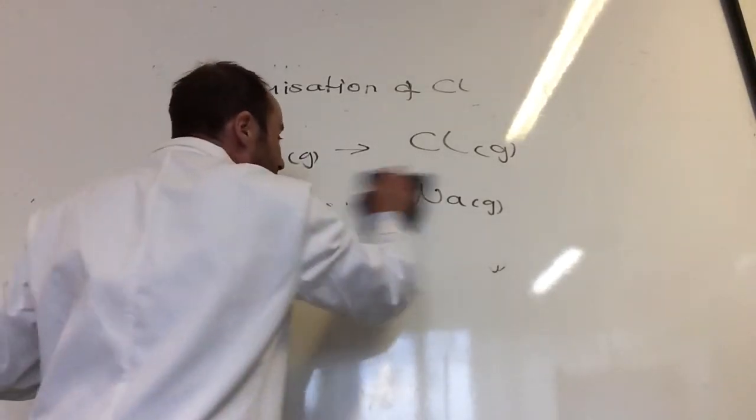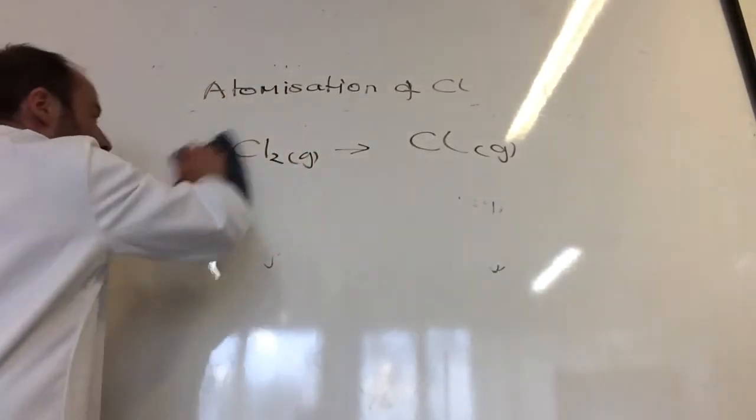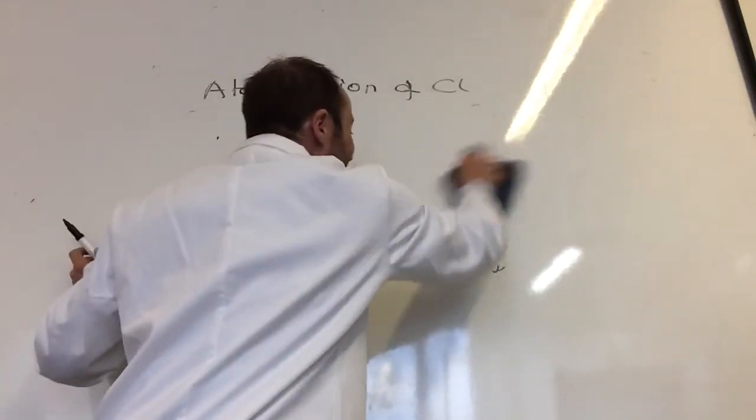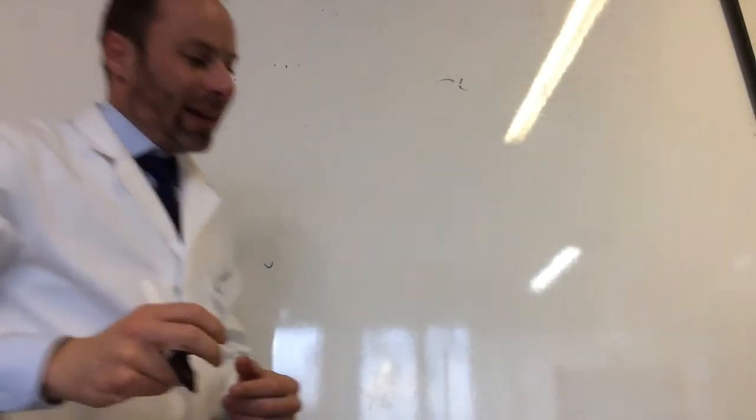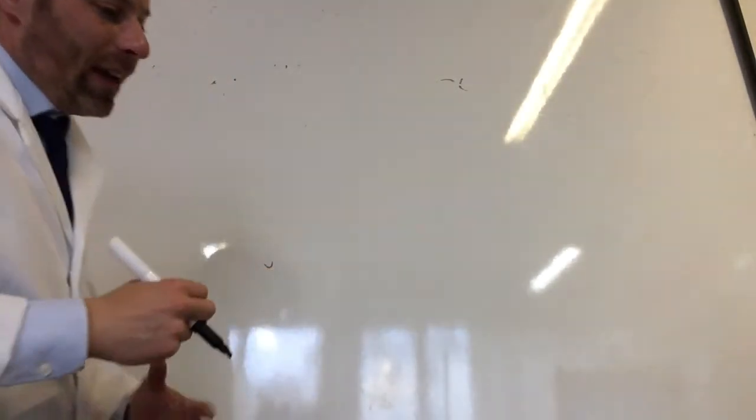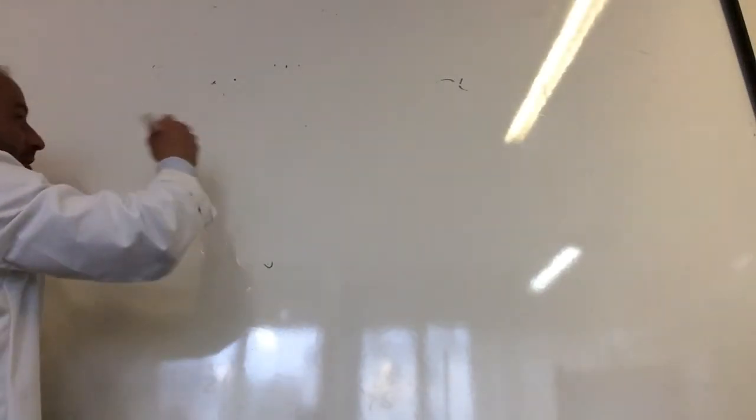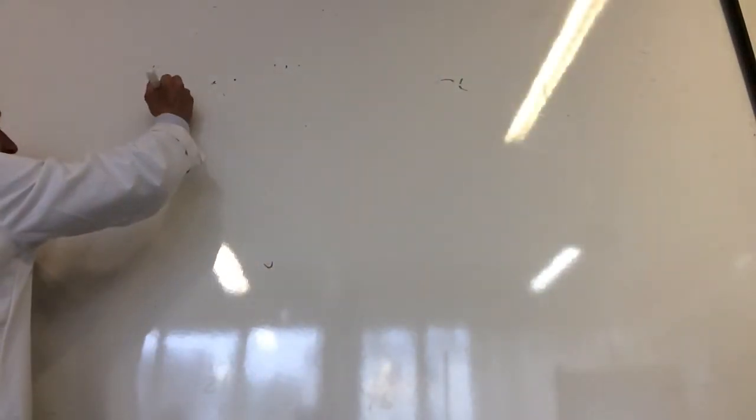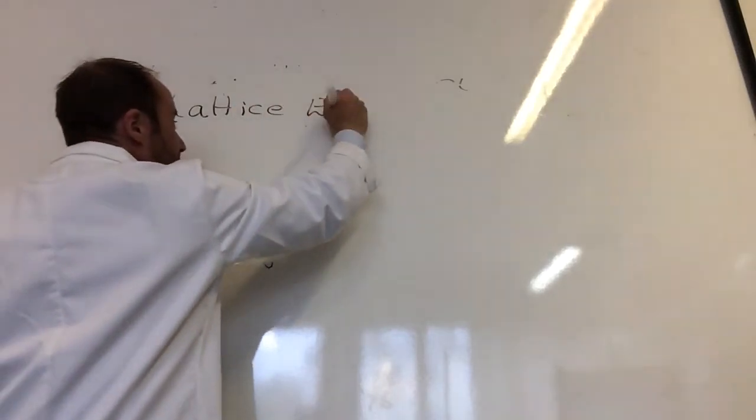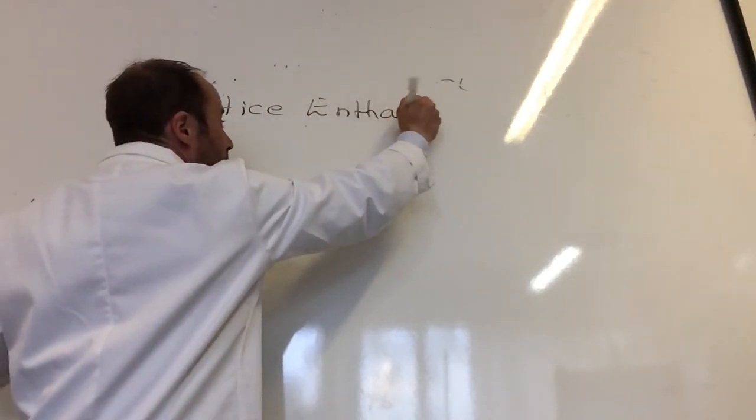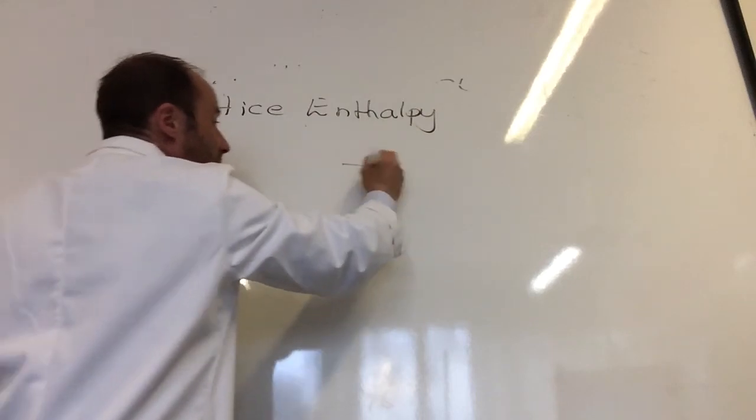And the only other one you need to know at this stage is lattice enthalpy. We're going to do the definition and then we're going to look at how we calculate it. So the lattice enthalpy is the formation of an ionic compound from the gaseous ions. So lattice enthalpy, I need to form one mole of an ionic compound.